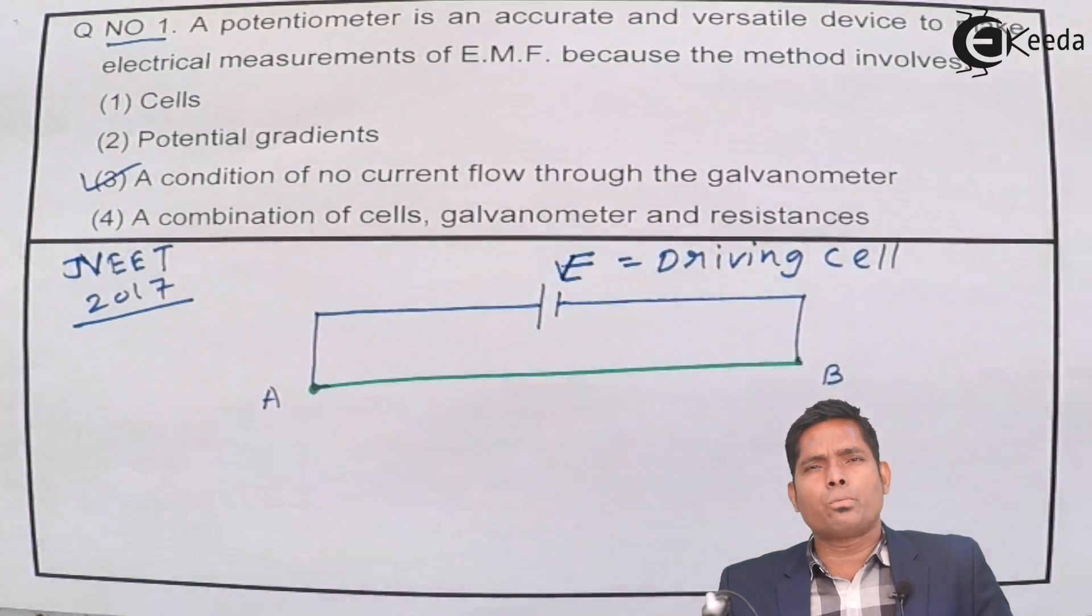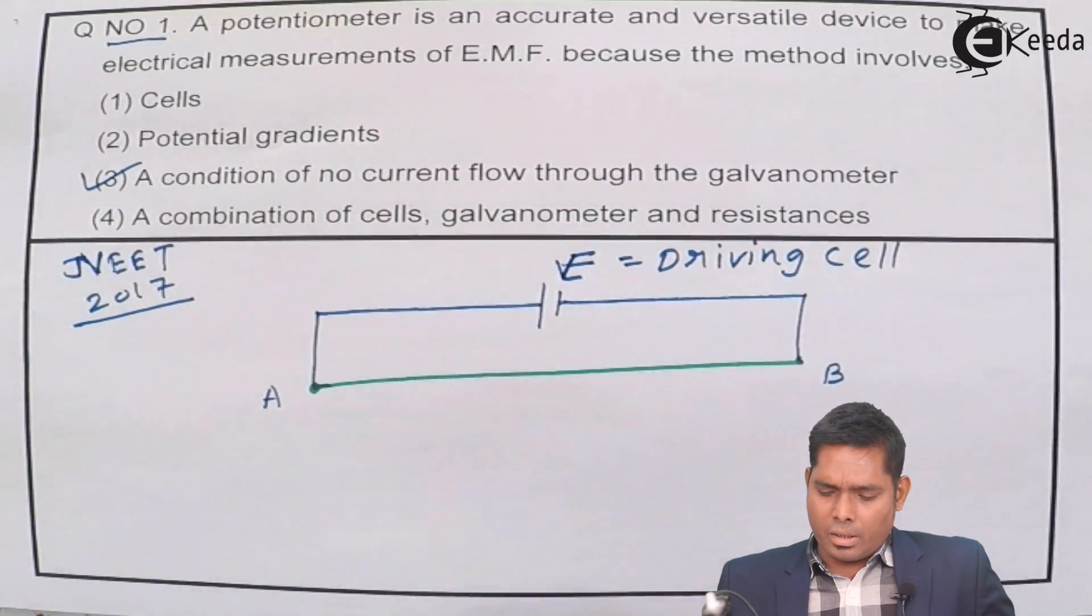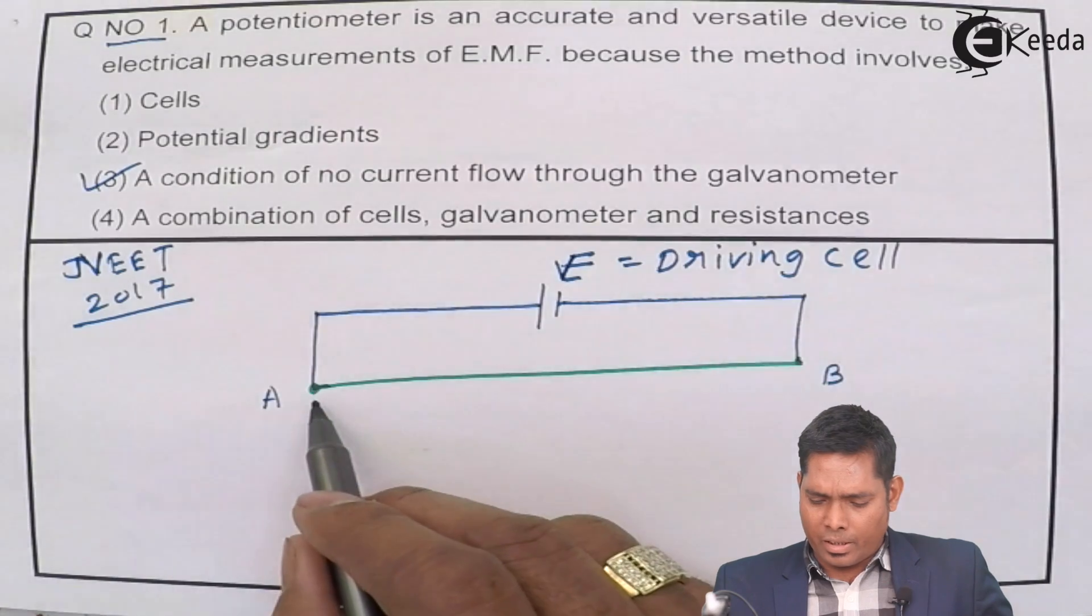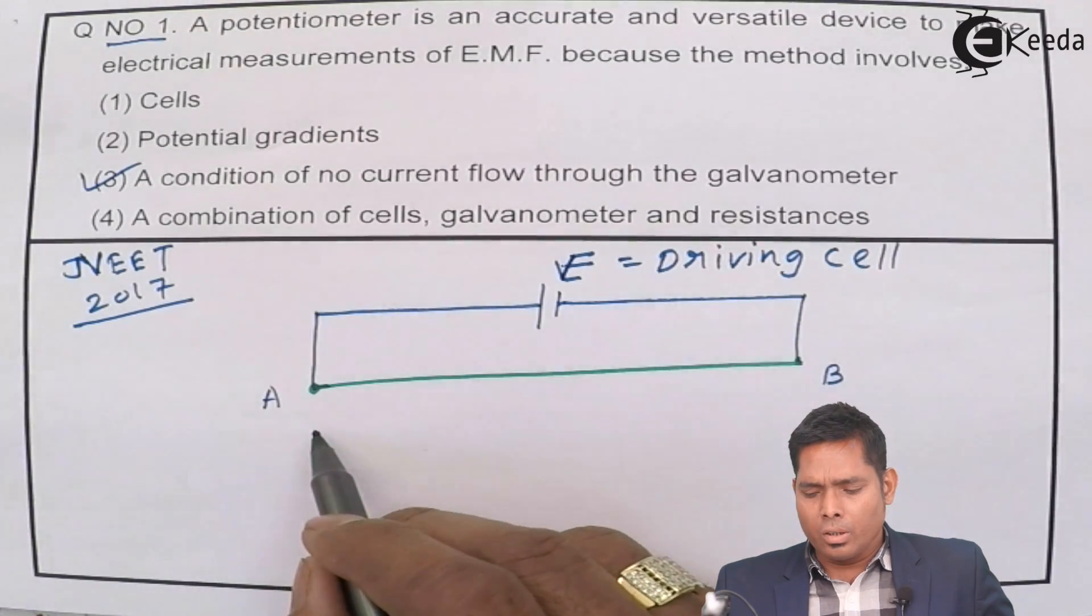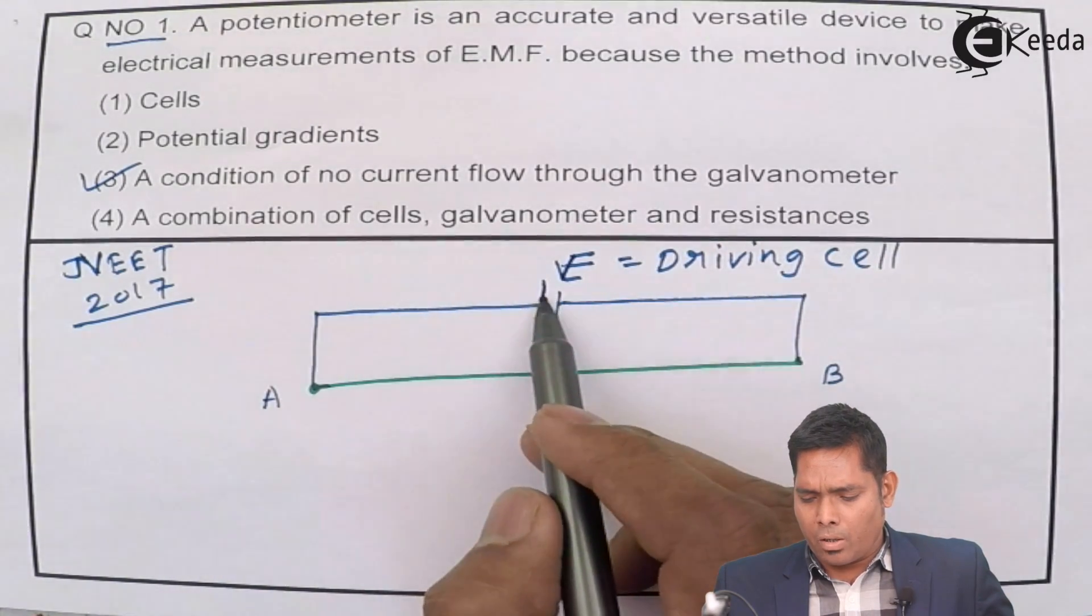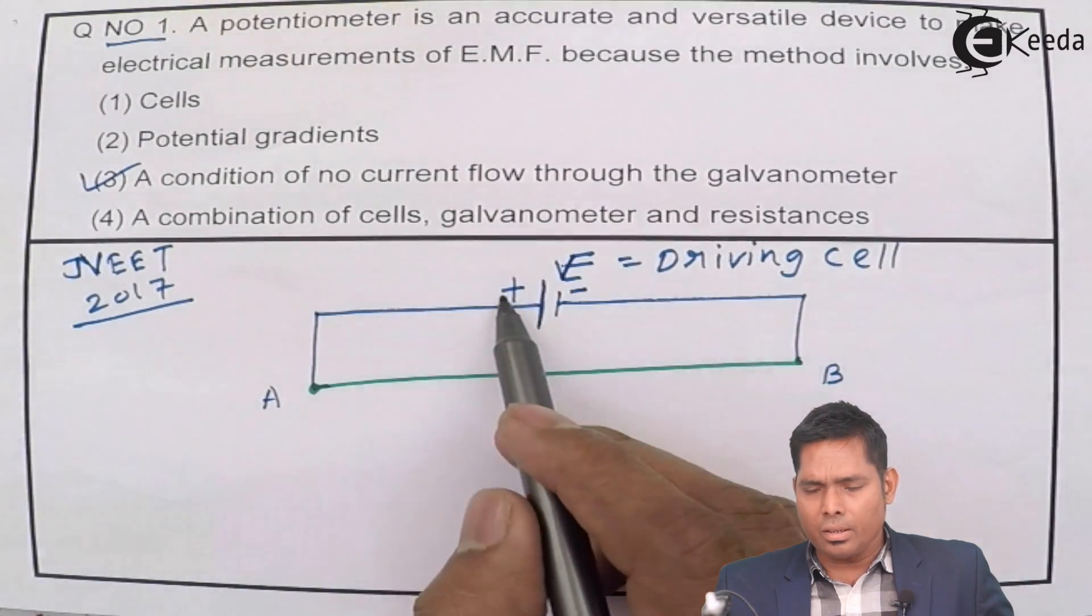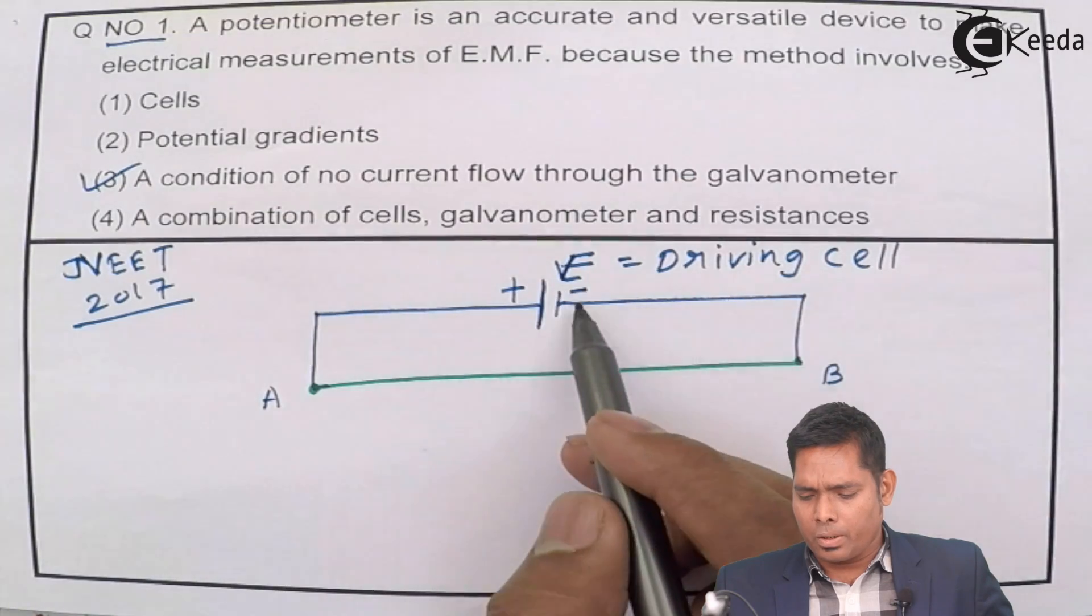And the EMF to be compared or measured is brought and connected at this point. This is the positive terminal of the driving cell, auxiliary battery, and this is the negative terminal. This is the high potential and this is the lower potential.